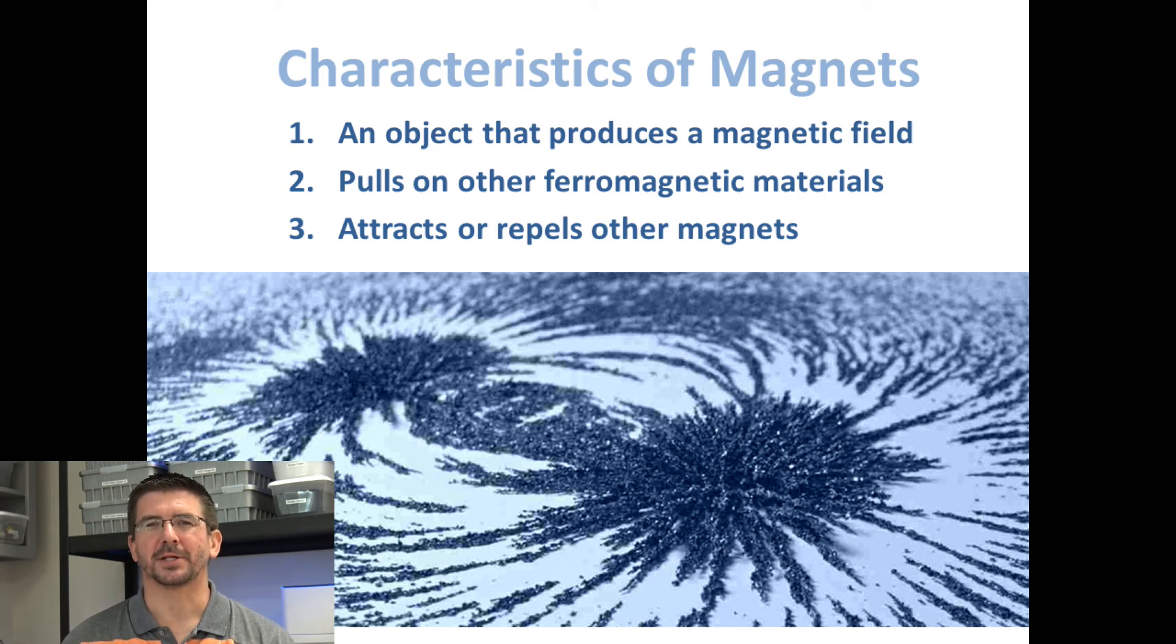The third characteristic is that magnets will attract or repel other magnets. Again, that force of attraction is the pulling force between a magnet and another object. We'll look later at how we can use this attraction and repulsion property of magnets to actually create motion in objects without touching them.